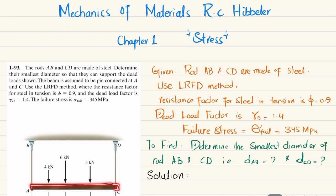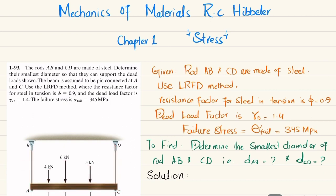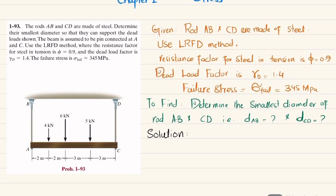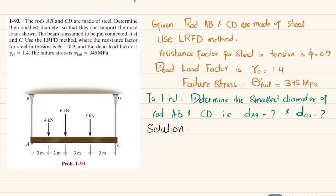You can see this is beam AC, supported by two rods AB and CD that are made of steel. The dead load is shown, and there are pin supports at points A and C. Using the load and resistance factor design (LRFD) method, we have to calculate the diameter of rod AB and the diameter of rod CD. Let's start with the solution.